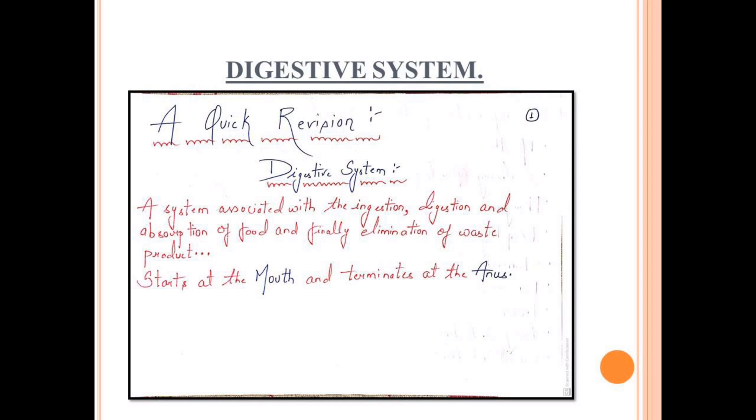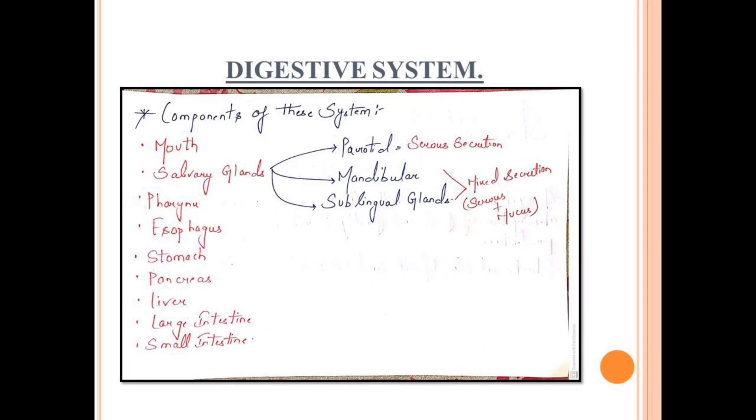It starts with the mouth and terminates at the anus. The components of the digestive system consist of mouth, salivary glands, pharynx, esophagus, stomach, pancreas, liver, large intestine, and small intestine. Salivary glands have three parts: parotid, mandibular, and sublingual. Parotid secretion is serous type. Mandibular and sublingual secretion is mixed type, meaning serous plus mucus both.